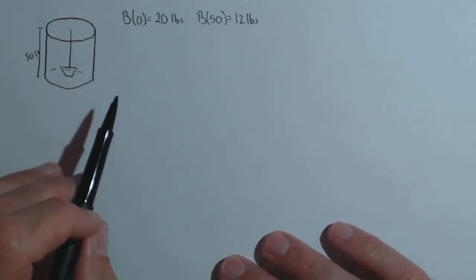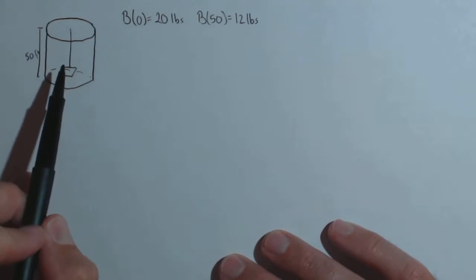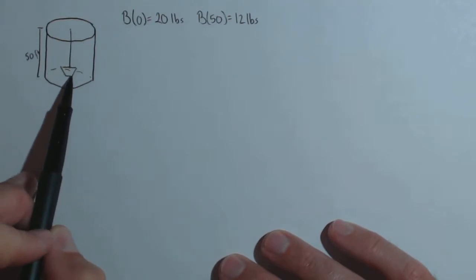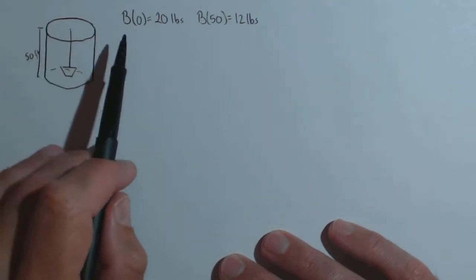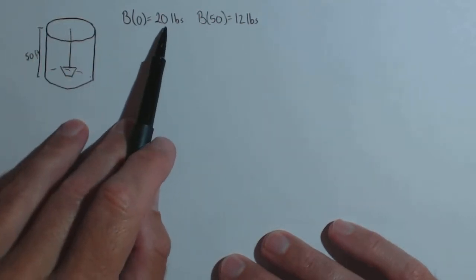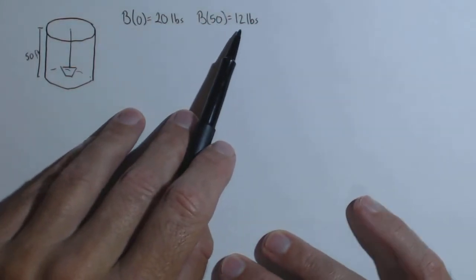In this video, we're going to look at calculating work when we have a varying force by looking at small intervals. First off, what's happening is we have a bucket being raised to the top of a well that's 50 feet. When the height is zero, the bucket weighs 20 pounds. When the height is 50 feet, the bucket weighs 12 pounds.